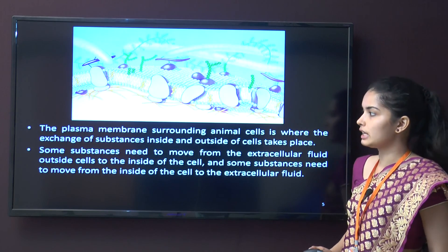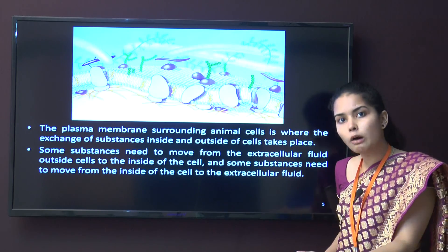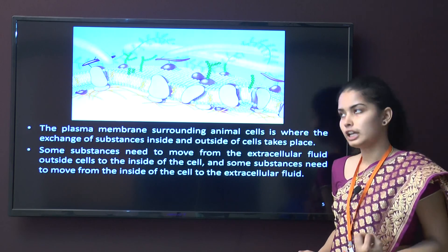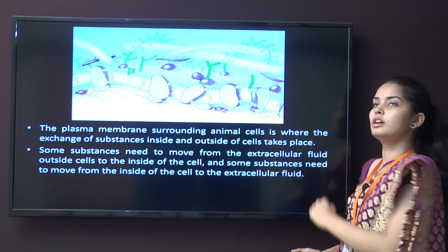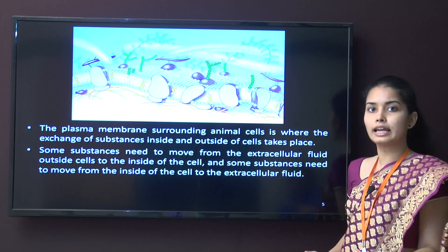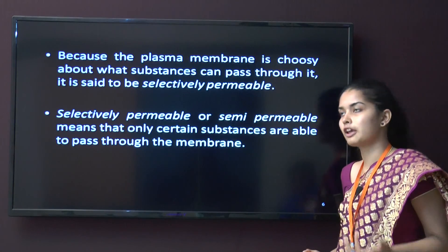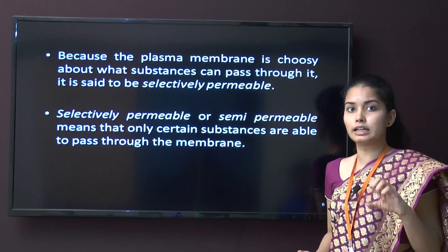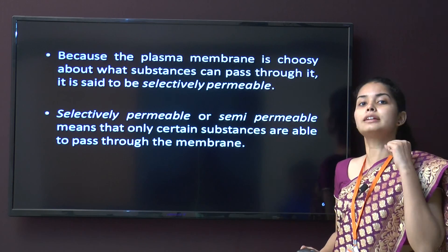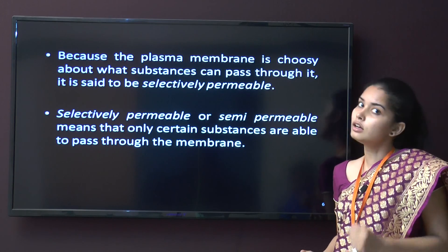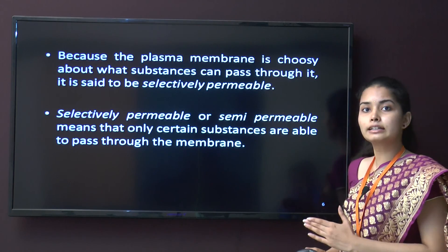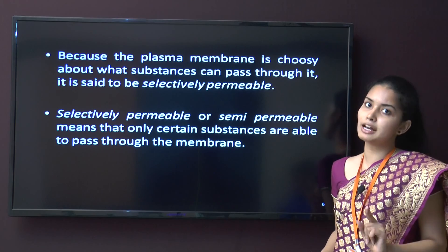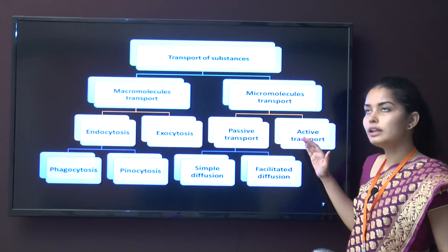The plasma membrane surrounds the animal cell and it is where the exchange of substances takes place. Some substances need to move out of the cell while others need to come in from the outer environment. Because the plasma membrane selects some materials, it is known as selectively semi-permeable — only some substances can pass through the plasma membrane.